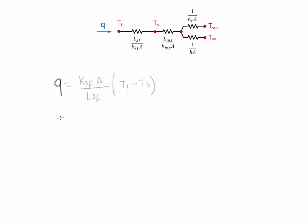We're looking for the value Ts. If we solve this equation, we get Ts equals Ti minus q Lsf divided by Ksf A. Plugging in the information we have, we find that the skin temperature is approximately 34.4 Celsius.